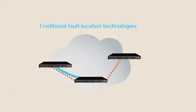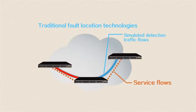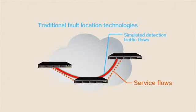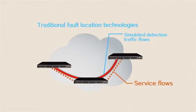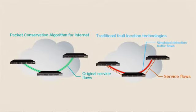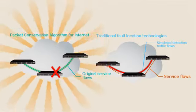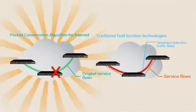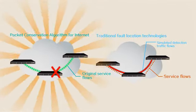Traditional fault location technologies detect faults by sending simulated detection traffic flows and can detect only the faulty links, while IPCA detects faults using original service flows and can precisely locate the faulty ports. IPCA significantly simplifies network operation and maintenance.